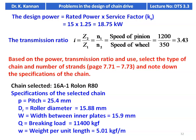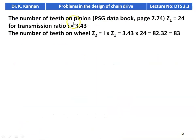The specification of the selected chain: pitch = 25.4 mm, roller diameter = 15.88 mm, width between inner plates = 15.9 mm, breaking load = 11,400 kgf, and weight per unit length = 5.01 kgf/m. From the data book page 7.74, for transmission ratio 3.43, Z1 = 24 teeth on the pinion. Number of teeth on the wheel Z2 = i × Z1 = 3.43 × 24 = 82.32, rounded to 83.